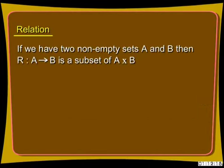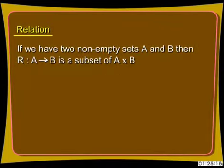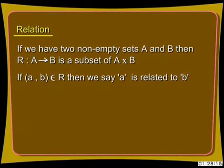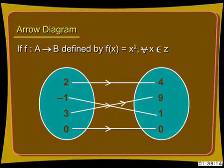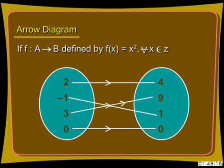If we have two non-empty sets A and B, then a relation R from A to B is a subset of A cross B, that is the Cartesian product of A and B. If ordered pair (A, B) belongs to R, then we say A is related to B. We can draw an arrow diagram representing relations by drawing two bounded figures to denote the two sets A and B, putting dots to represent the elements, and for each ordered pair (A, B) drawing an arrow from A to B.